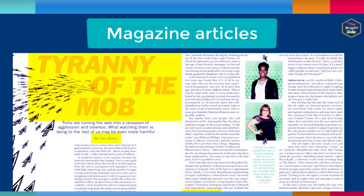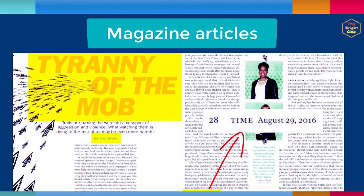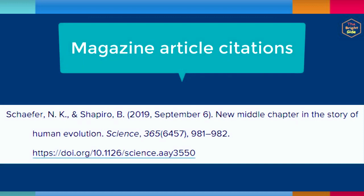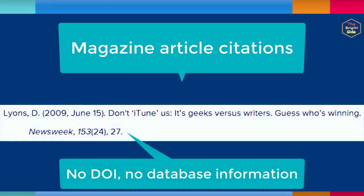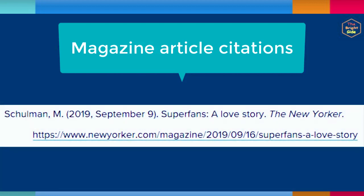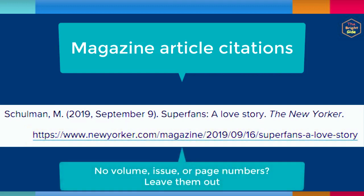Like journal articles, citation information for magazine articles might be found at the top or the bottom of the page. Magazine articles follow a similar format, including the author, date, article title, magazine title, volume, issue, and page numbers. If a magazine article has a DOI, include it in the reference. If the magazine article does not have a DOI and is from a library database, end the reference after the page range and don't include database information. If the magazine article does not have a DOI but has a URL because it's from an online magazine not part of a database, include the URL as a hyperlink at the end of the reference. If the magazine article does not have volume, issue, or page numbers, leave out the missing elements from the reference.